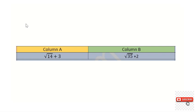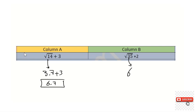Regarding question number 11: comparing root 14 plus 3 versus root 35 plus 2. Root 14 is approximately 3.6 or 3.7, so the left-hand side is about 6 point something. Root 35 is approximately 6 because root 36 equals 6. So root 35 plus 2 is approximately 8. Of course the right-hand side is the greatest.